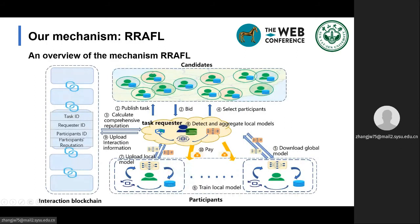We consider a scenario where each individual with data and computing resources can act as a task requester or participant. At a certain moment, an individual with a limited budget as a task requester publishes a FL task. Interested individuals submit their bid price to the task requester. The task requester calculates their comprehensive reputation and uses reverse auction to select participants by combining their bids and comprehensive reputations. Then the FL task starts. In each round, the requester uses quality detection to filter out bad local models. After model training, the requester measures the contribution and reputation of each participant in this task, uploads the interaction information to the blockchain, and pays the participants.